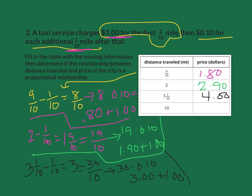For the last one, I've got 10 minus one-tenth. That's going to equal nine and nine-tenths. How many tenths is that? That's 99 tenths. 99 times 0.10 is going to be $9.90. I'm going to add $1 to that, which gives me $10.90.